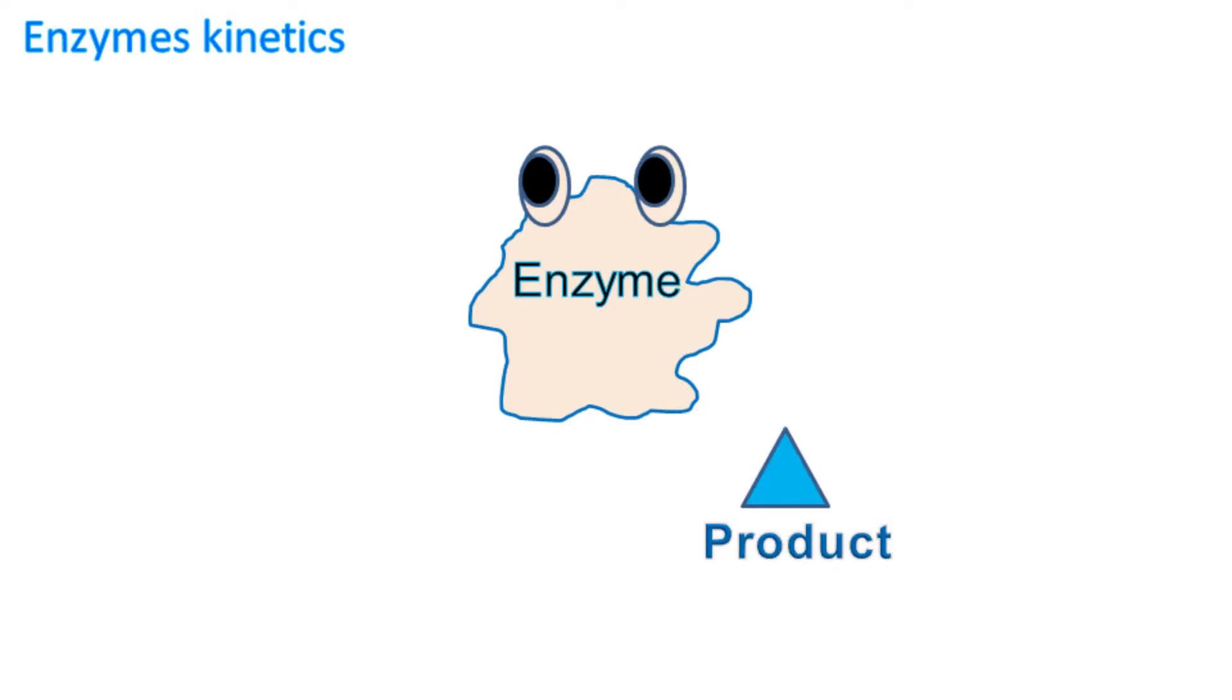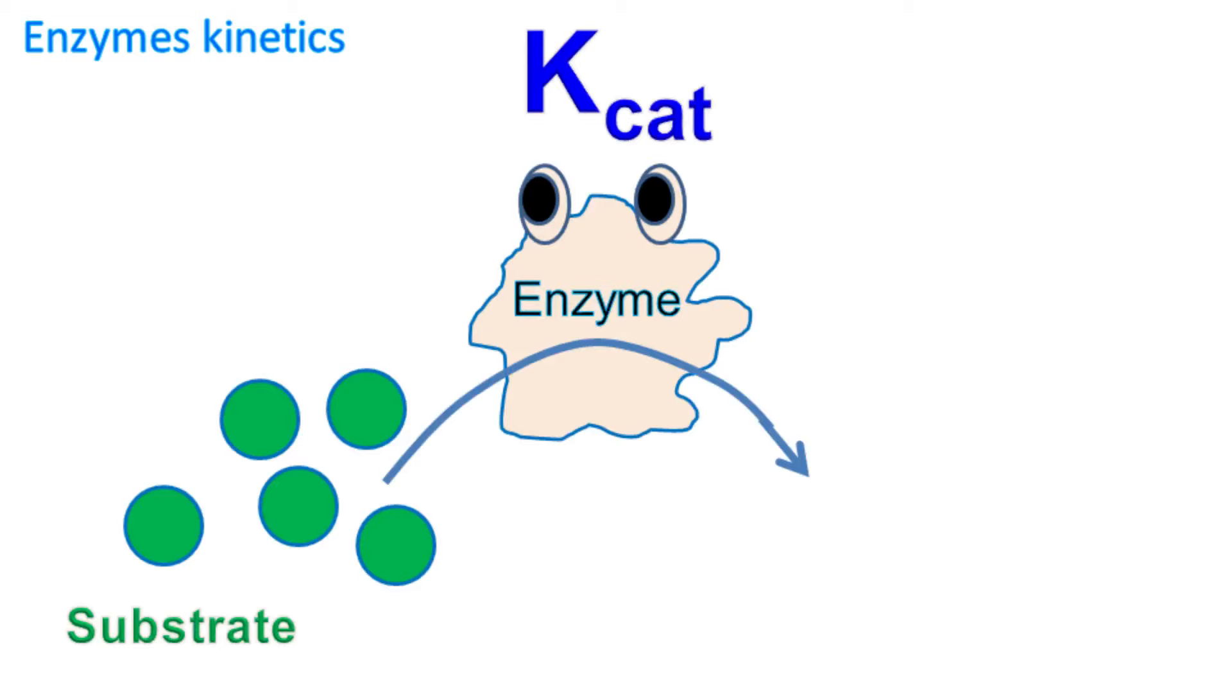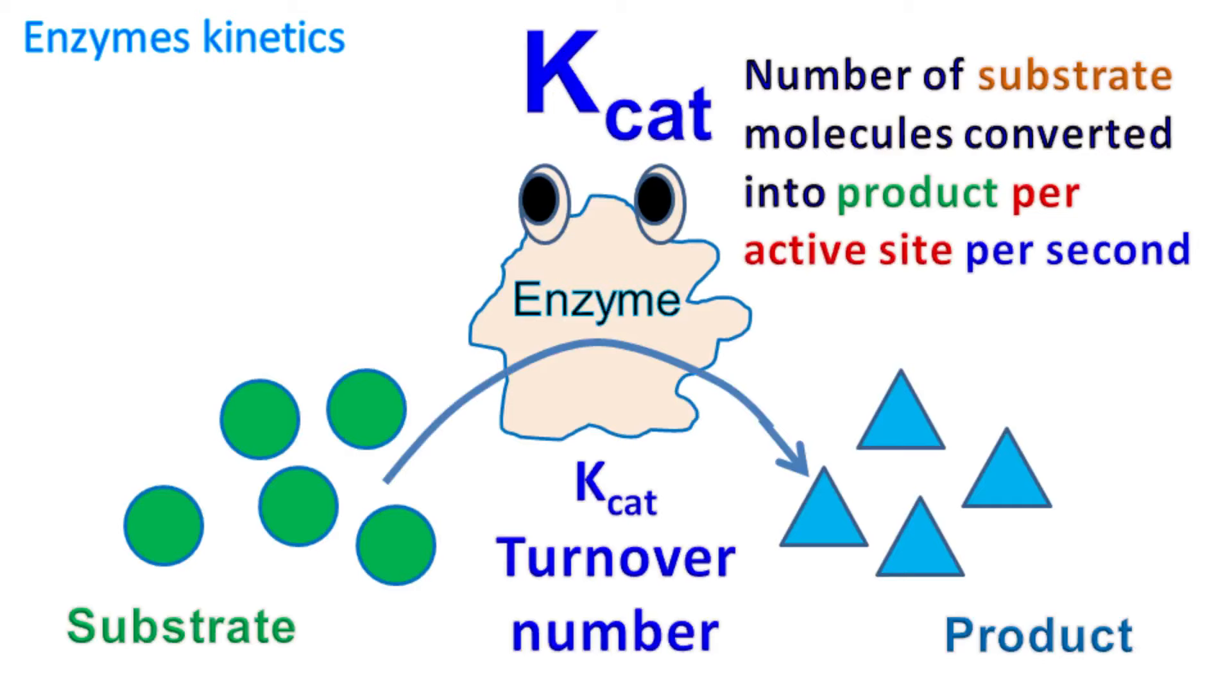Now here comes a very important term, Kcat. The number of substrate molecules converted into product per active site of enzyme in one second is called turnover number or Kcat. The units of Kcat will be second inverse.